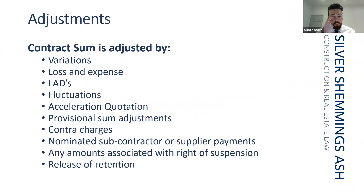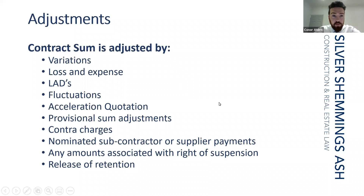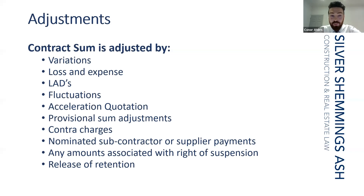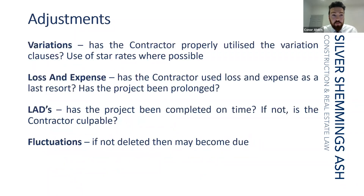The bulk of a final account is around adjustments — what adjustments do I need to make? Basically the contract sum is adjusted by: true variations, loss and expense, liquidated damages, fluctuations, acceleration quotations, provisional sum adjustments, contra charges, nominated subcontractor and supplier payments, amounts associated with the right of suspension, and the release of retention. There's quite a few adjustments there.